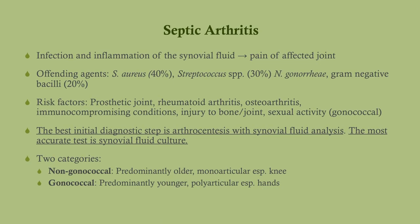Septic arthritis is inflammation through infection of the synovial fluid, resulting in pain of the affected joint. The most common cause is staph aureus, but streptococci can occur, Neisseria gonorrhea is the number two cause in young adults, and gram-negative bacilli are also seen. Risk factors are everything you'd expect — anything that compromises the joint or introduces something that shouldn't be there. The best initial diagnostic step and most accurate test is arthrocentesis to look at the synovial fluid — make sure you perform synovial fluid analysis and get a culture.